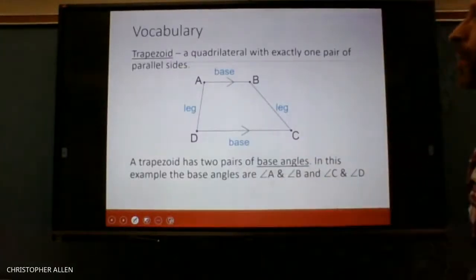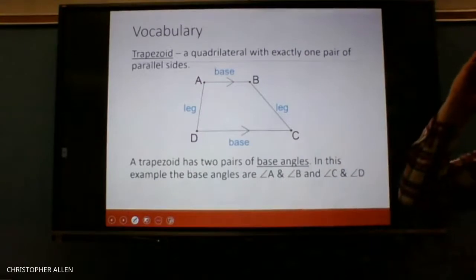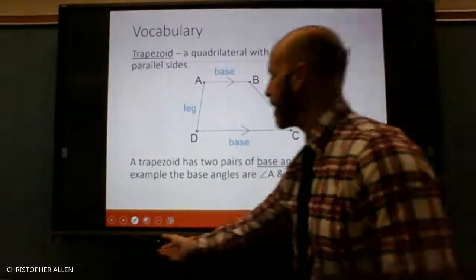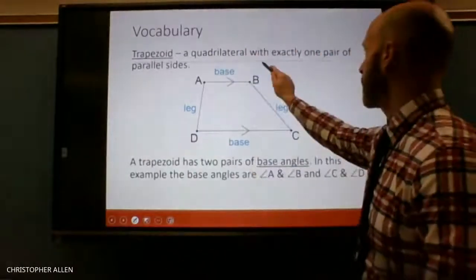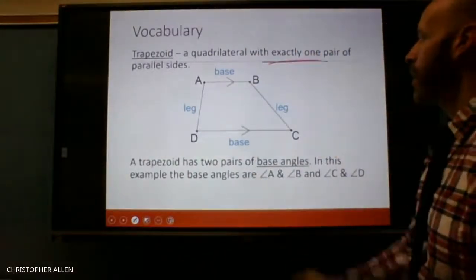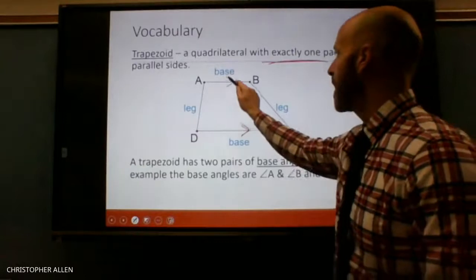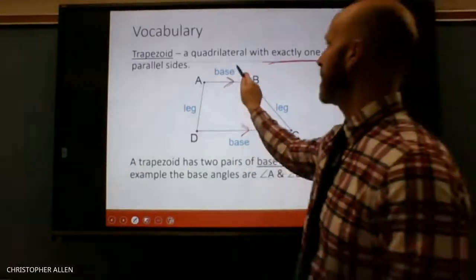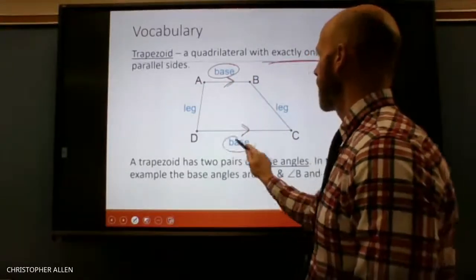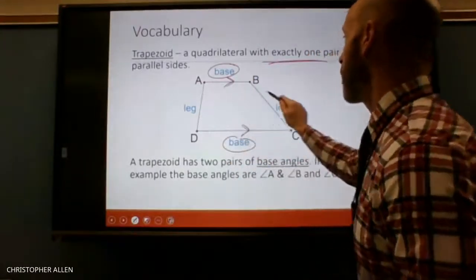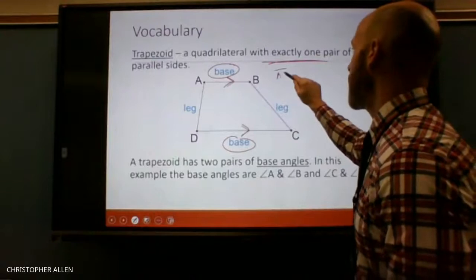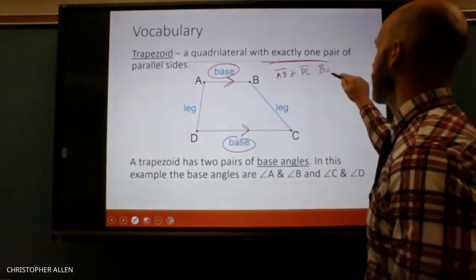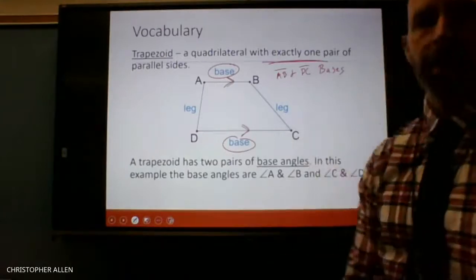So first of all, let's talk about vocabulary. What is a trapezoid? A trapezoid is a quadrilateral with exactly one pair of parallel sides. This side is parallel to this side. Now we call the parallel sides the bases.